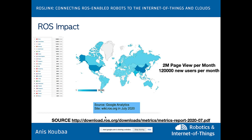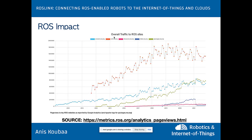This image from download.ros.org shows ROS users distributed worldwide, with large concentrations in the US, China, Japan, India, Germany, and South Korea. There are around 2 million page views per month on the ROS website and approximately 120,000 new users per month. Overall traffic to ROS sites is always increasing.